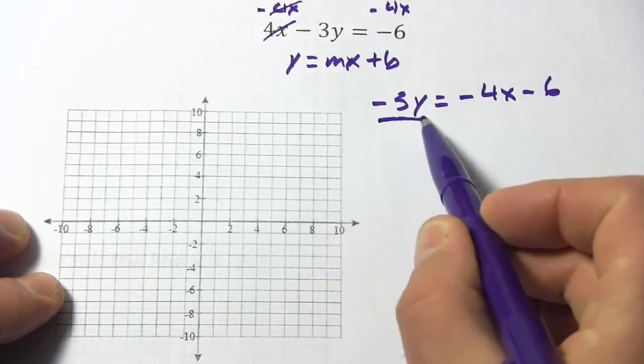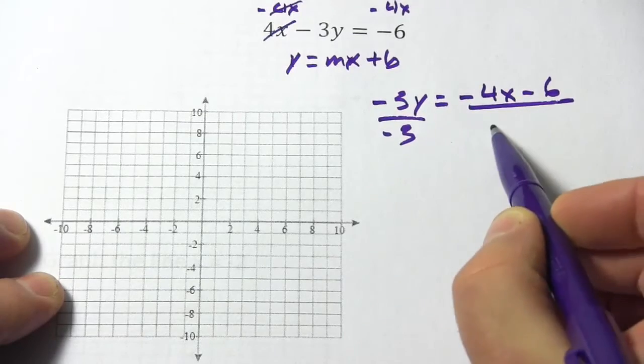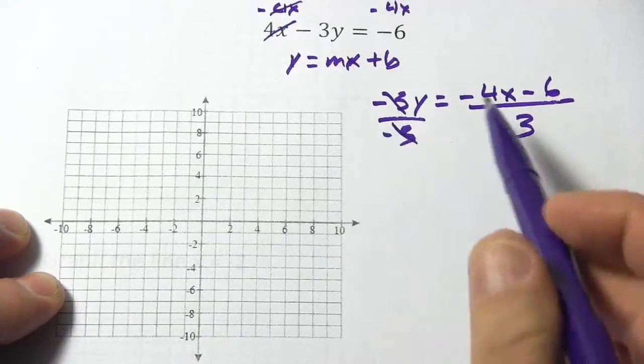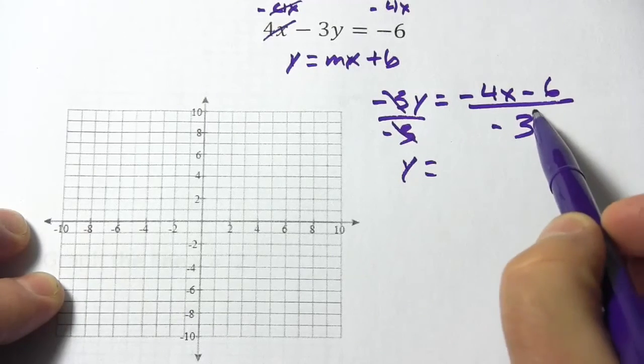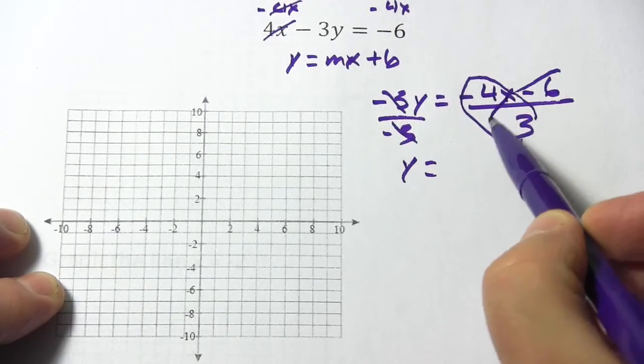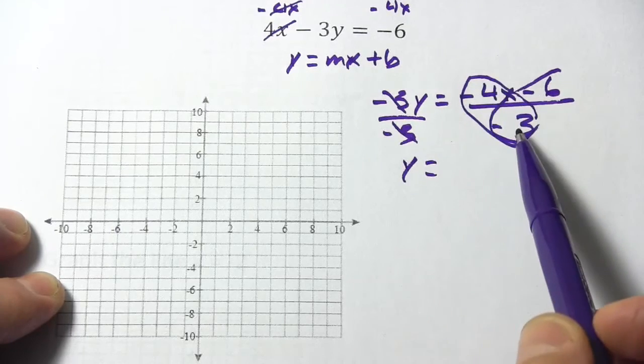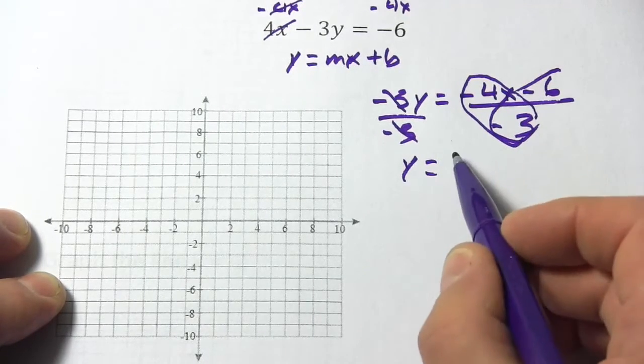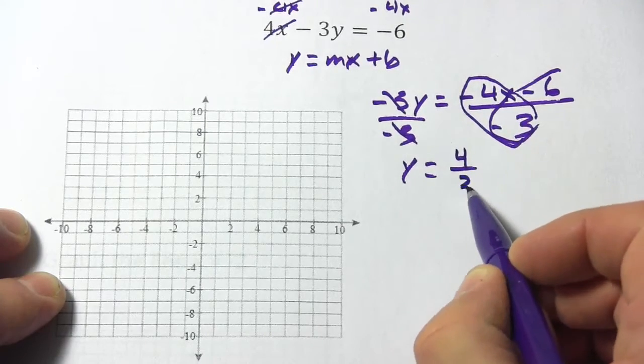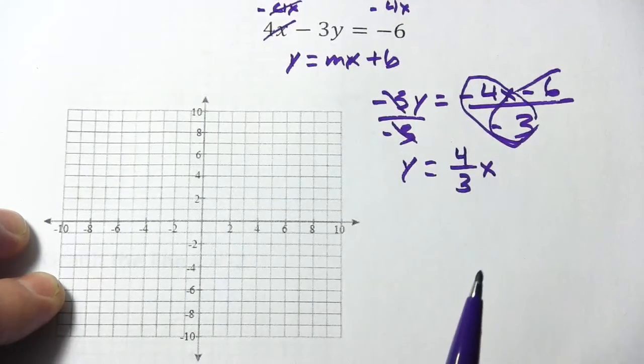And then we just need to divide by negative 3. Over here we just get y. And over here we take both these pieces one at a time. So there's this piece and then there's this piece. So negative 4 divided by negative 3. Well, a negative divided by a negative, that's a positive. So that's just 4 over 3. So I'm going to write that as 4 thirds x.